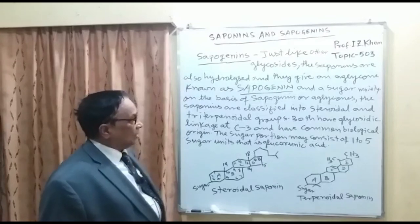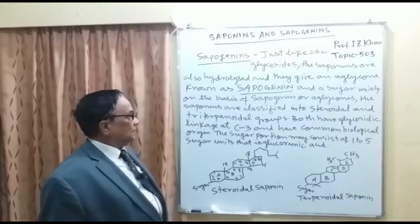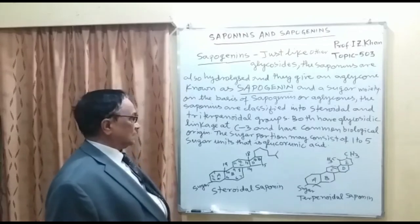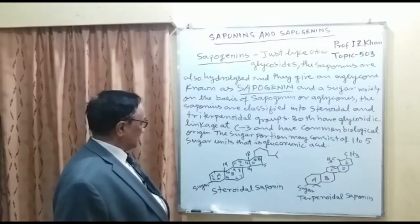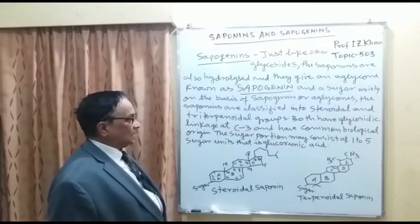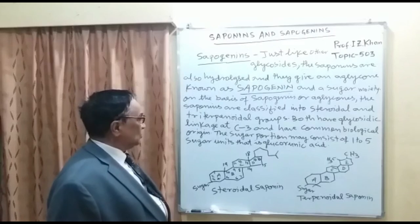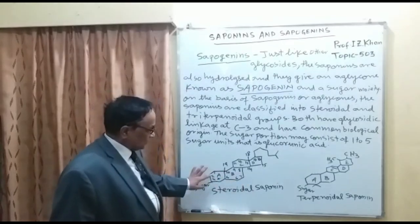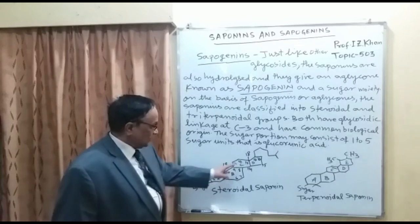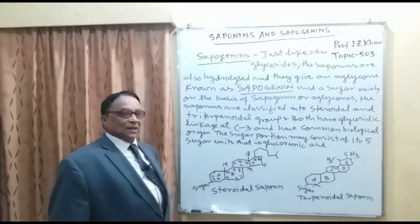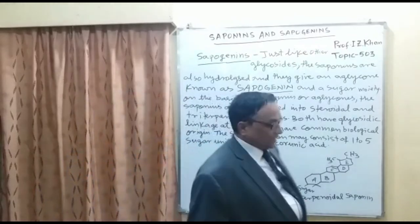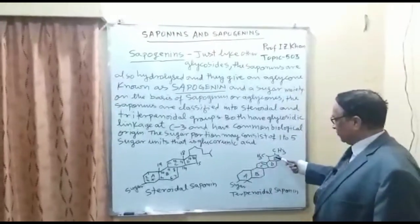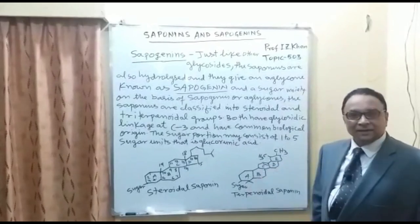On the basis of the sapogenin or aglycone, saponins are classified into steroidal and triterpenoid groups. Both have glycoside linkage and common biological origin. The sugar portion may consist of one to five sugar units, including glucuronic acid. Steroidal saponins have a four-ring structure (rings A, B, C, D), while terpenoidal saponins contain six rings — all six-membered.